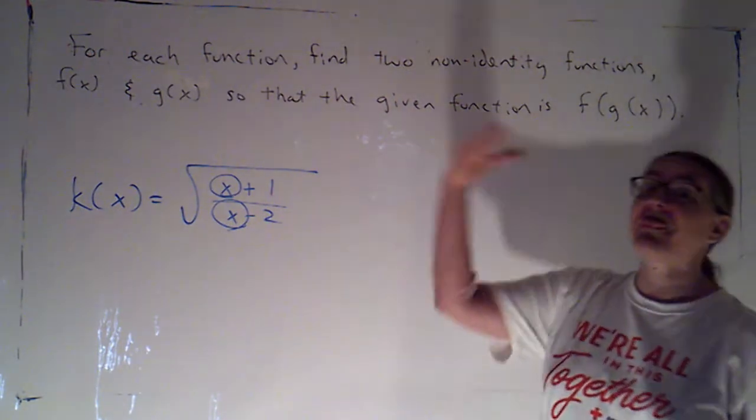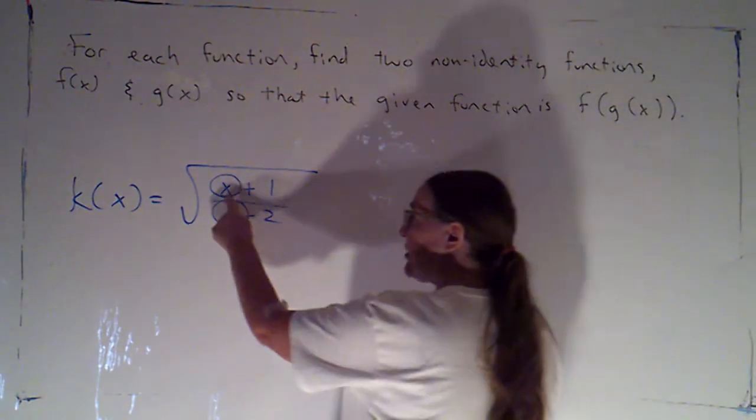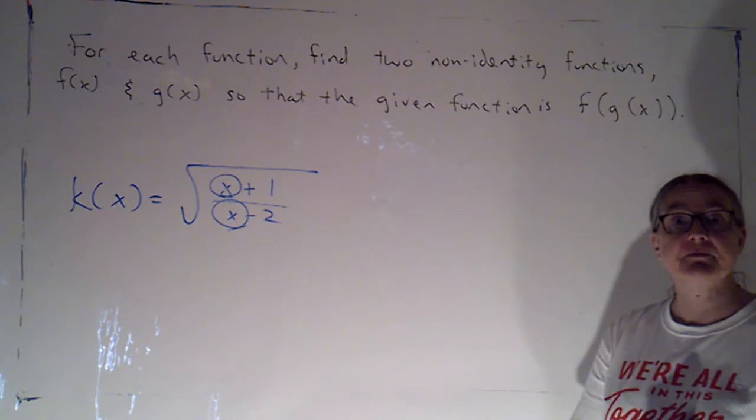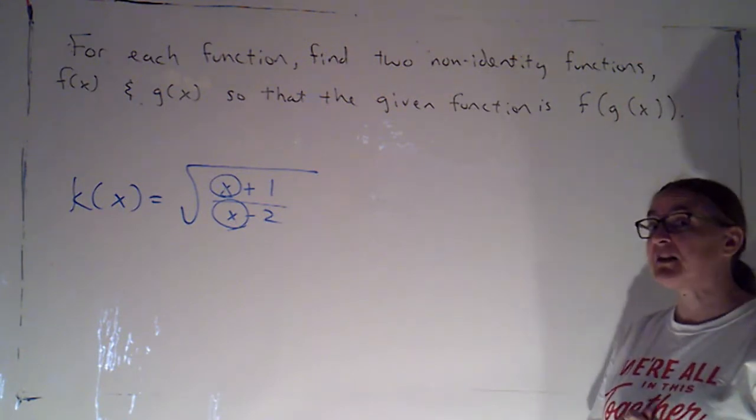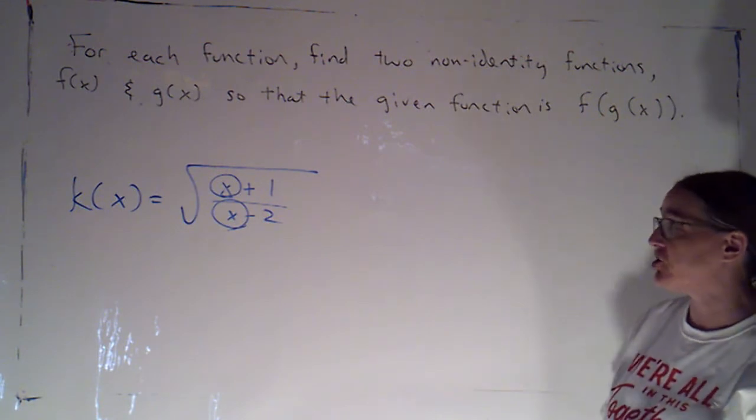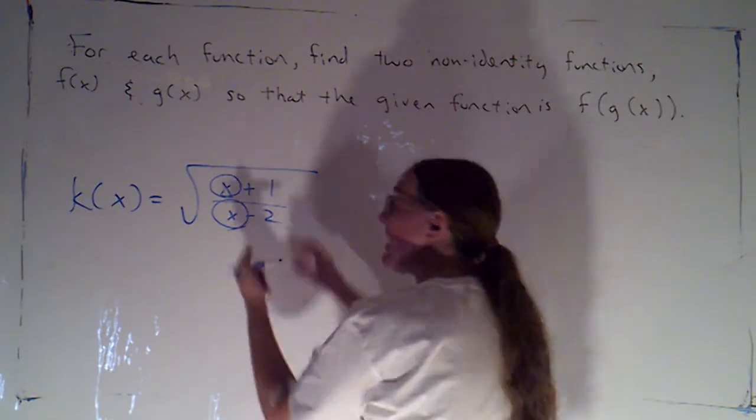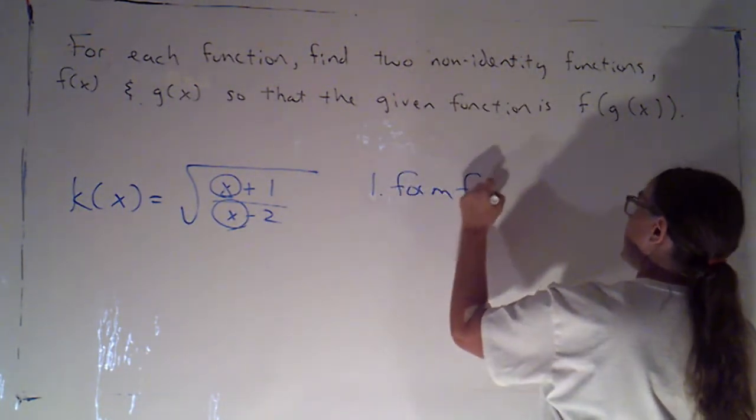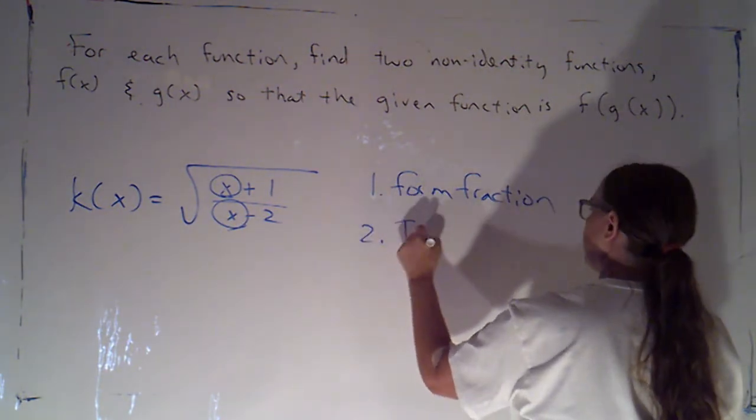But then, whatever that result is, that's what I'm going to plug into the next function. Whenever I see the same variable expression showing up in two different places, I can be pretty confident that I want those two things to be parts of the same function. So, it looks like what we're doing is we're forming this fraction and then we're taking the square root. I'm going to just write it that way: form the fraction, take the square root.